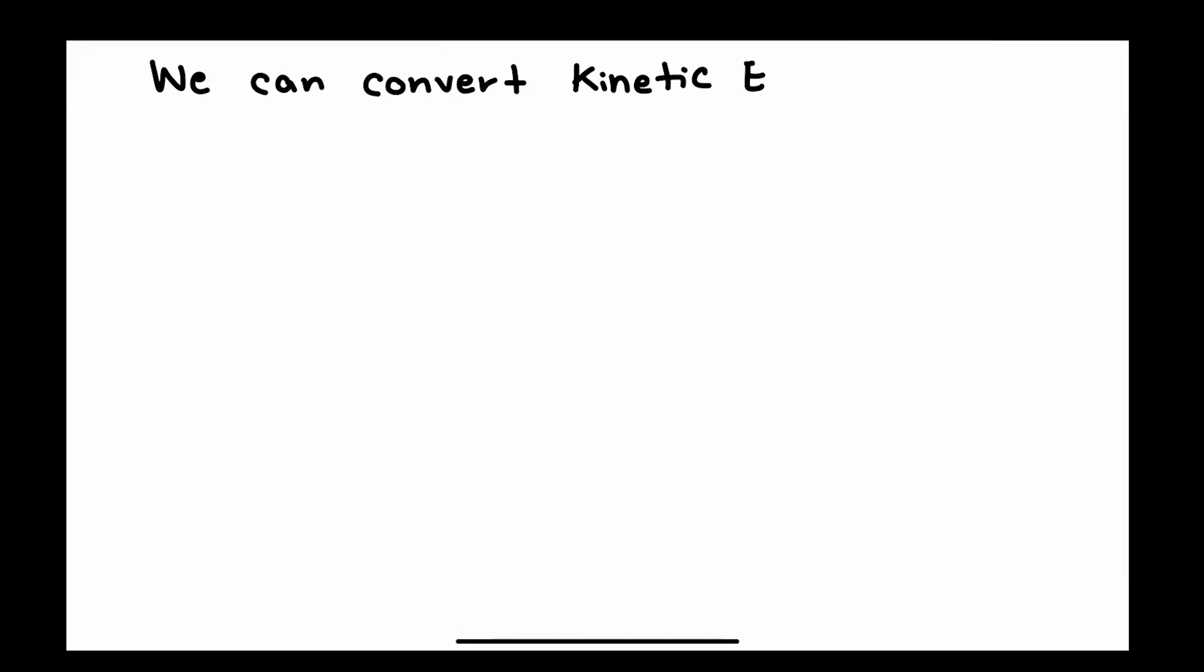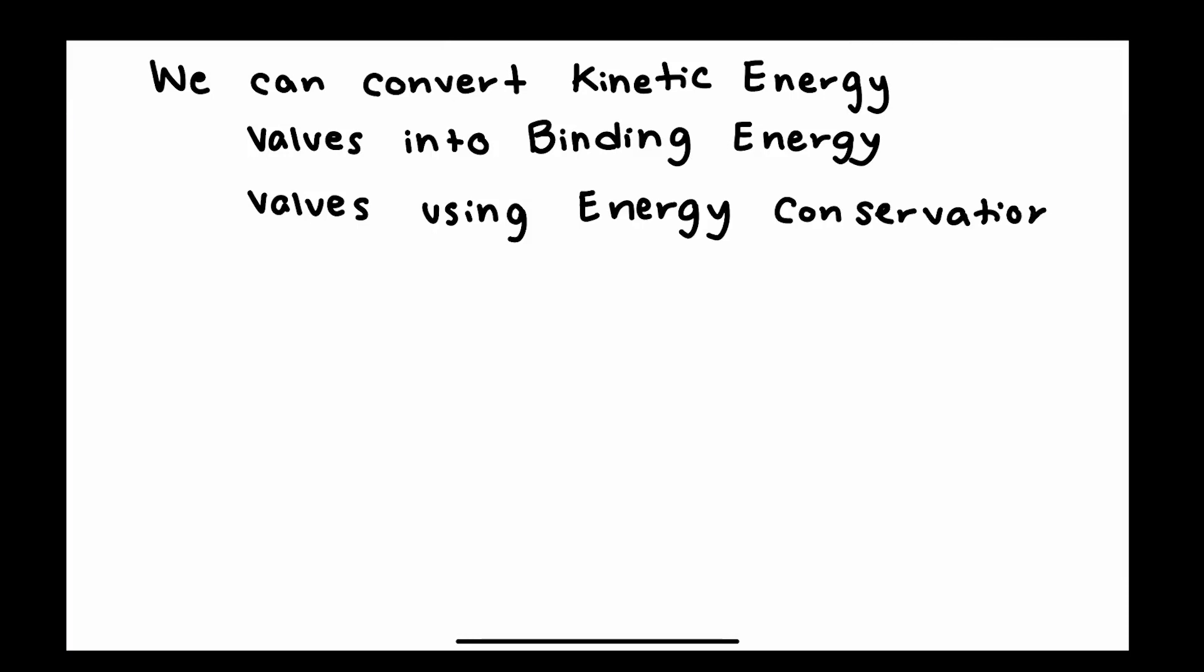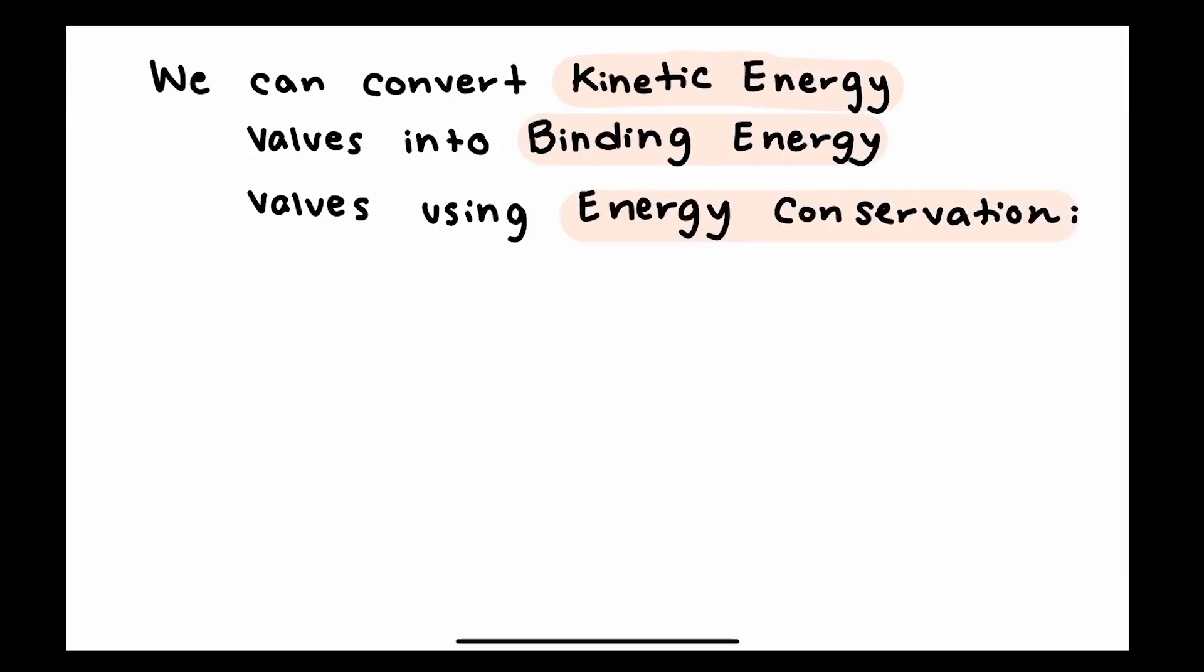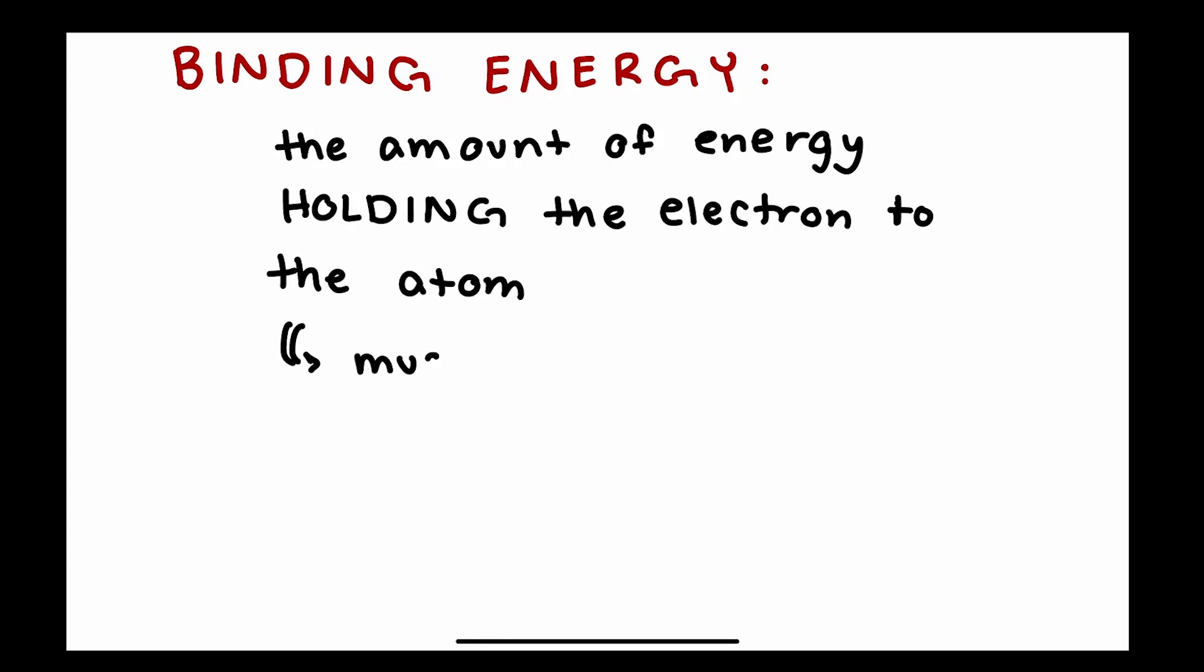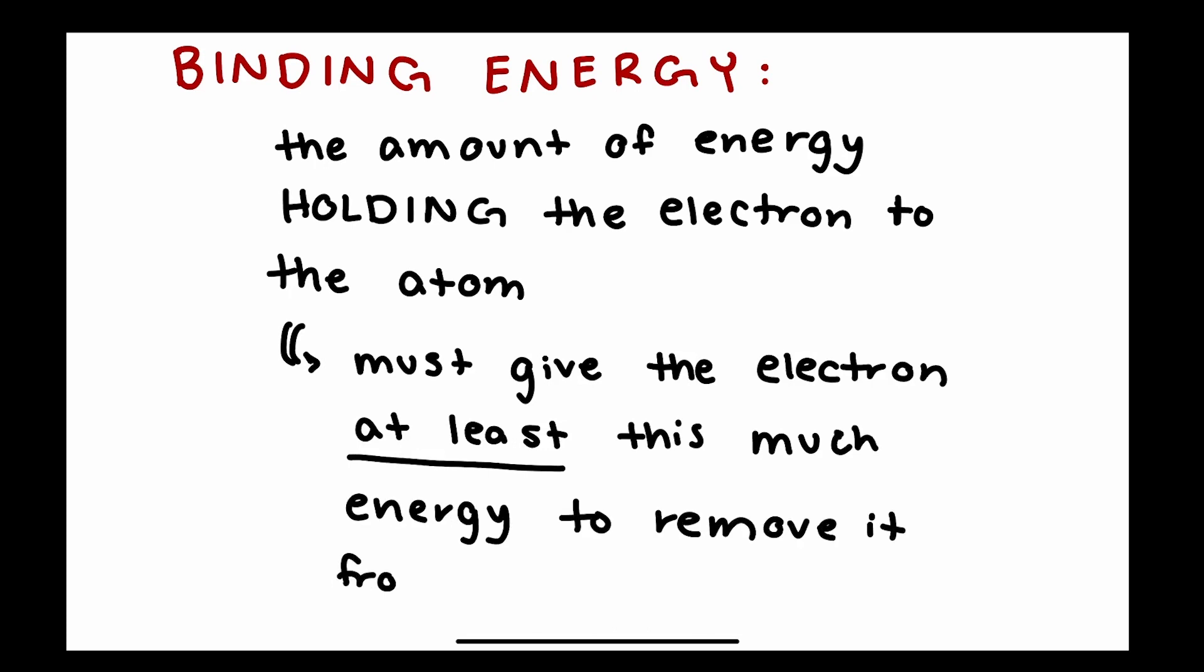We can convert these kinetic energy values into something called binding energy through energy conservation. Just a note on binding energy: this is the amount of energy that is holding the electron inside the atom, and we need to give the electron at least this much energy in order to remove it from that atom.